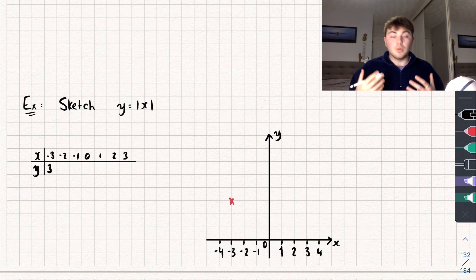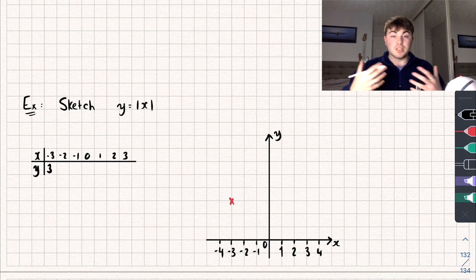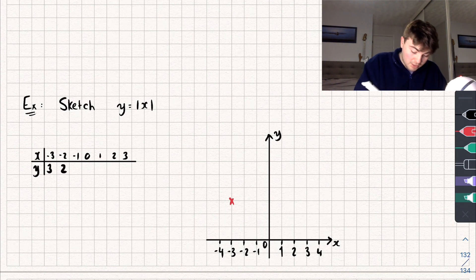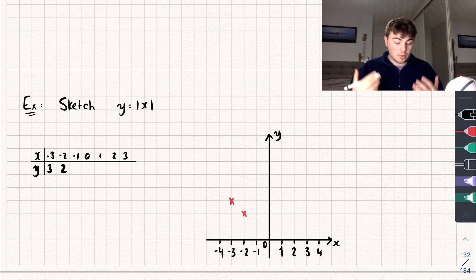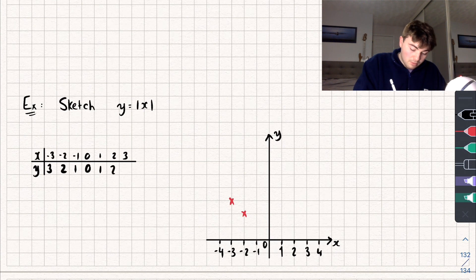If I have x equaling negative 2, then my modulus of x is going to output positive 2, so that's going to be a positive 2 and I'll sketch that point on. If I've got x equaling negative 1, it's going to output positive 1. 0 will output 0, 1 will output 1, 2 will output 2 and 3 will output 3.